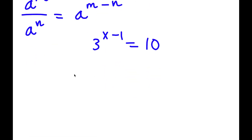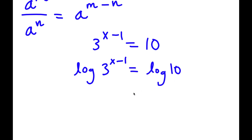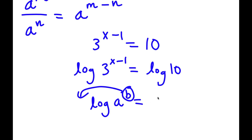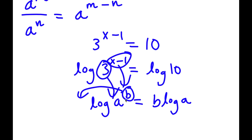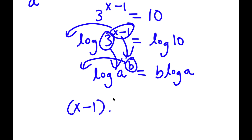So now to solve this, I'm going to take the log on both sides. So now I have log of 3 to the power of x minus 1 is equal to log 10. An important property of logarithms is that if I have something in the form log a to the power of b, I can move b to the front of the logarithm, so this equals b times log a. In this case, I have log 3 to the power of x minus 1, where 3 is a and x minus 1 is b. So now I have x minus 1 times log 3 is equal to log 10.